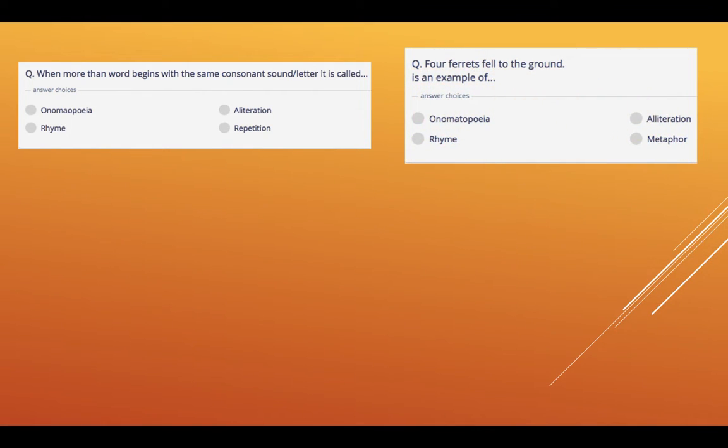Four ferrets fell to the ground is an example of onomatopoeia, alliteration, rhyme or metaphor.